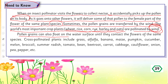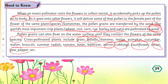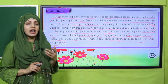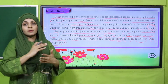Pollen grains can also float on water, moving on the water surface until they contact the flower of the same species. Cross-pollinated flowers include grass, alfalfa, banana, maize, pumpkin, cucumber, melon, broccoli, summer radish, tomato, bean, beetroot, carrots, cabbage, cauliflower, onion, pepper, pea, etc. Cross-pollination is also facilitated through water, wind, and animals, because it involves an external source — that is why it is called cross-pollination.